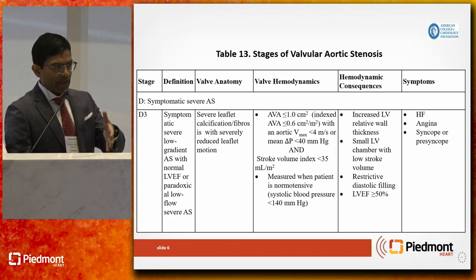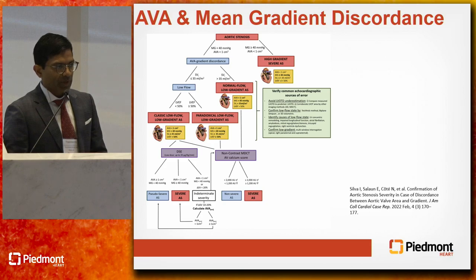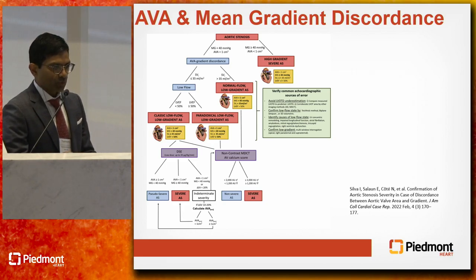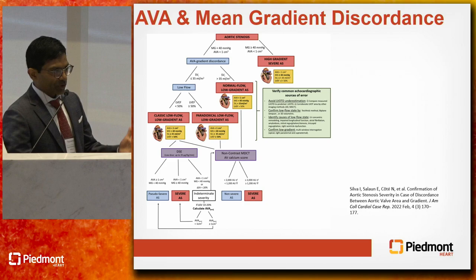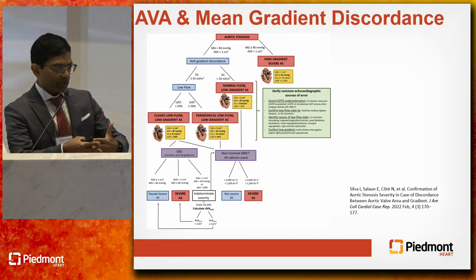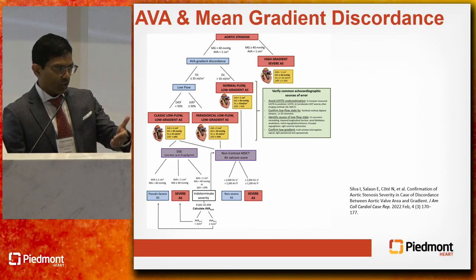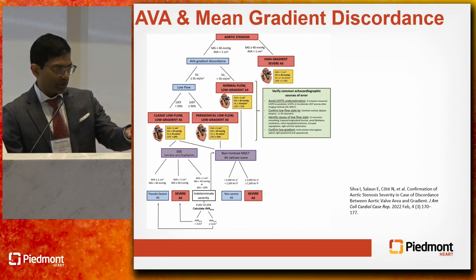These patients are symptomatic, have abnormal valves, and a low valve area. This framework comes from work by Dr. Philippe Pirabeau from Ottawa, who pioneered this area. Looking at aortic stenosis at a high level: we divide it into high gradient severe AS — not the focus of this talk — and then cases with discordance between aortic valve area and gradient. Within that discordance category, we have patients with normal flow and low gradient, and then the classic D2 and D3: low flow, low gradient with low EF, and low flow, low gradient with preserved EF.